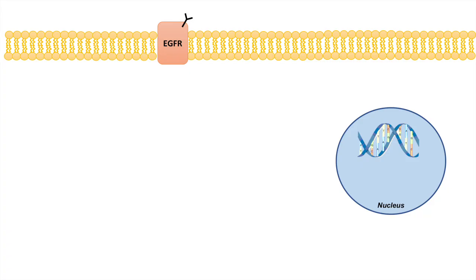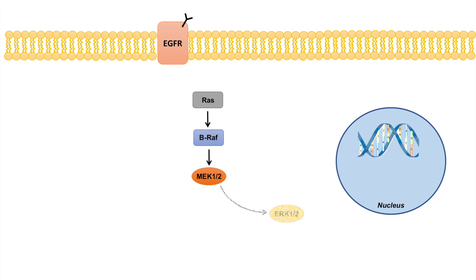So what exactly is the pathway and how does it actually operate? Well, first we have RAS. RAS activates RAF — particularly important is BRAF. RAF then activates MEK, both MEK1 and 2, which then activates ERK1 and 2. That's pretty much the basic structure of the pathway — it's very simple, but we'll see in a moment how complex it can really get.